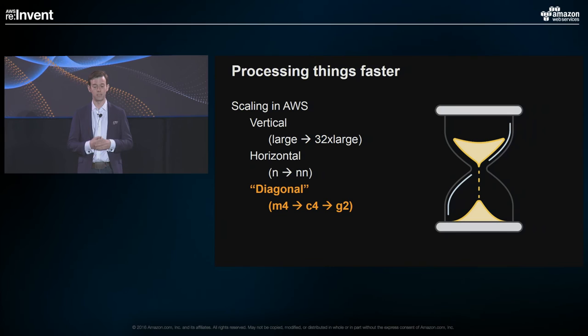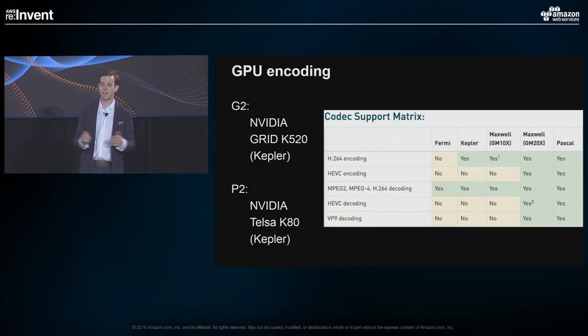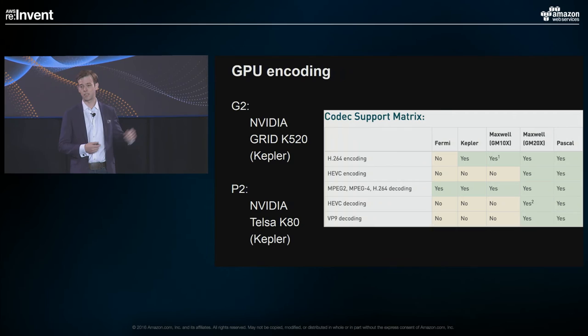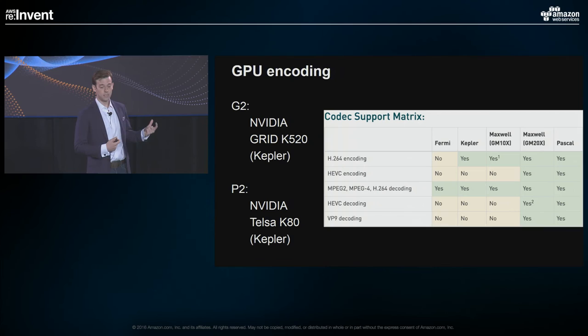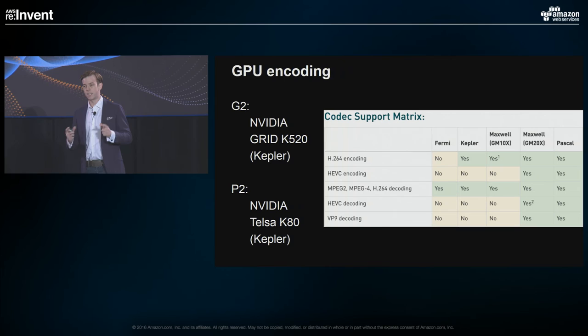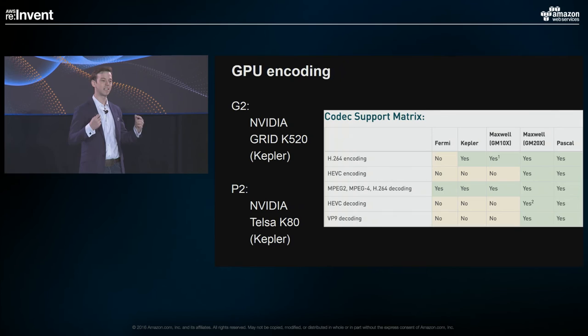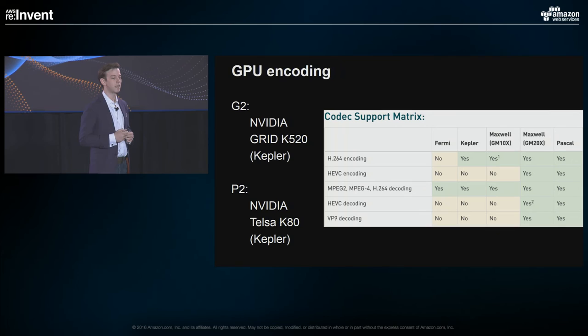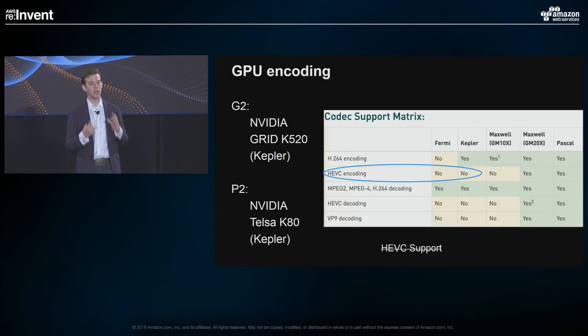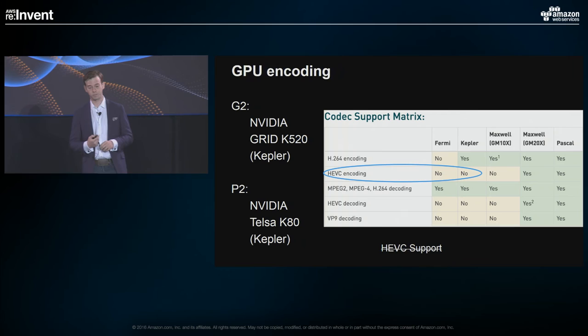When you think about processing video, you might say, hey, you just launched Elastic GPU — let's use that. For those familiar with our G2 or P2 instances, they use NVIDIA GRID or NVIDIA Tesla cards. Both use an architecture called Kepler. There are different supports for different encodings, decodings, and processings across different architectures. Within 4K video, a lot of video is encoded with H.264 — a fantastically efficient protocol. But 4K tends to be HEVC. And there is no HEVC support in Kepler. So today, with Elastic GPUs and P2 and G2 instances, we can't use hardware acceleration for the 4K video component.